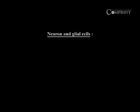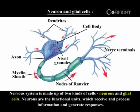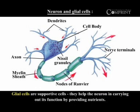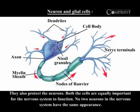Neuron and glial cells. The nervous system is made up of two kinds of cells: neurons and glial cells. Neurons are the functional unit which receives and processes information and generates a response. Glial cells are supportive cells. They help the neuron in carrying out its function by providing nutrients, and they also protect neurons. Both cells are equally important for the nervous system to function.